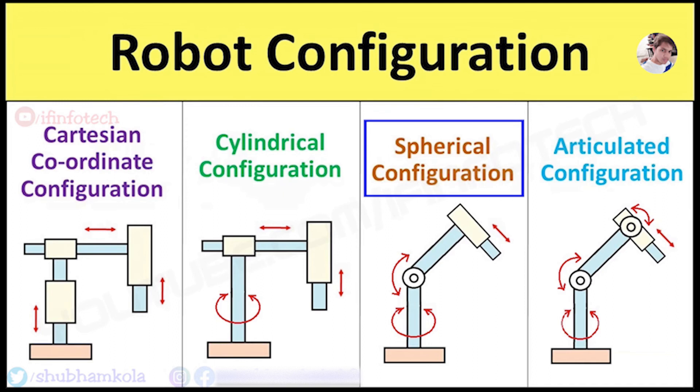Next is Spherical Configuration, also called Polar Configuration. It has 1 prismatic joint and 2 revolute joints. First rotary movement occurs about a vertical base axis while second rotary movement is pivot about horizontal axis. Prismatic joint moves wrist rapidly in and out. This configuration allows robot to operate in spherical work volume. It provides larger work envelope than Cartesian or Cylindrical Configuration.